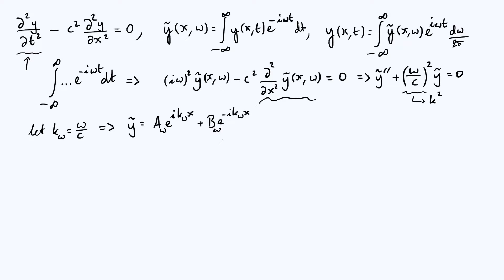So a and b can depend on omega in this case. We now actually already have a general solution for the Fourier transform of y. a(omega) and b(omega) are arbitrary constants — they could be fixed by boundary conditions and initial conditions, but if you're trying to find the general solution they're just arbitrary constants. So we can go back to y as a function of x and t by using the inverse Fourier transform now.